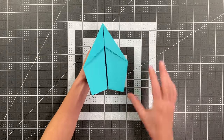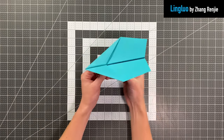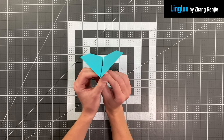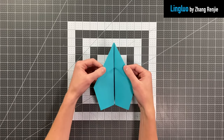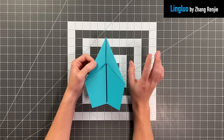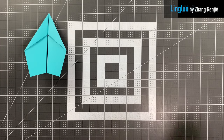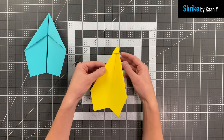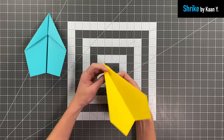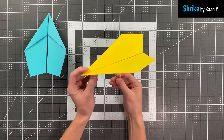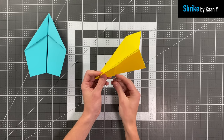Our first winner from the Foldable Flight Paper Airplane Designers Contest for 2022 is Ling Luo, designed by Zhang Renji, and this paper airplane is as good as it looks. It's an incredible performance design that locks together in its three-dimensional shape — just very elegant. Our next is a similar design: Shrike by Khan Y. You can see it locks in the nose and has a different shape, but it is another excellent performance model that locks in its three dimensions.